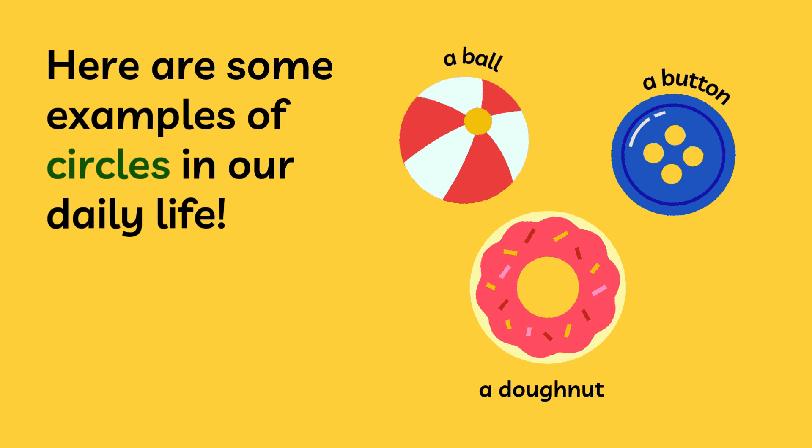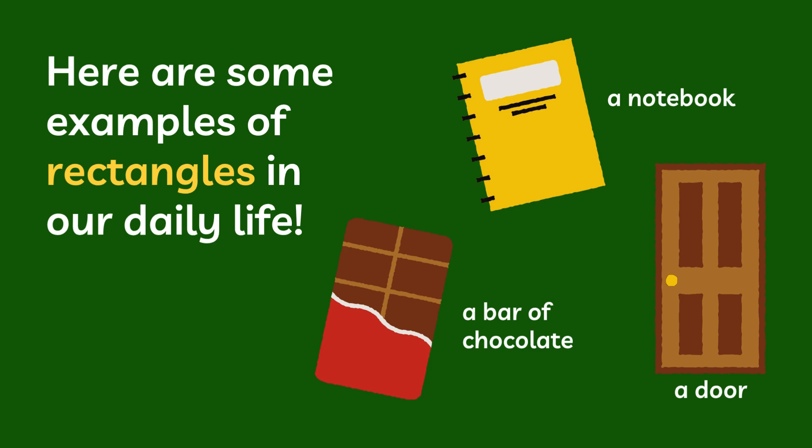These all are circle shaped. This is a rectangle. A rectangle has four corners and also four sides.